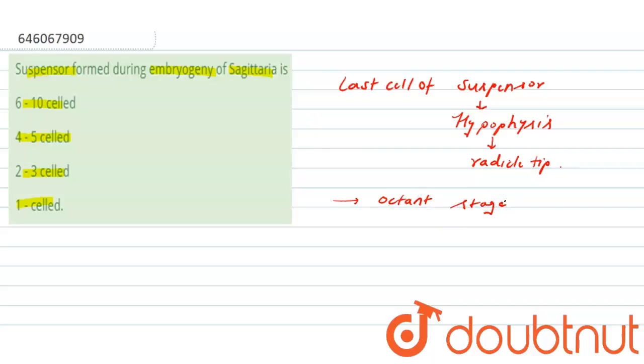So the suspensor form during embryogenic obsidemia is, it is 1 celled suspensor. So 1 celled suspensor is formed during development of initial phases of embryo.